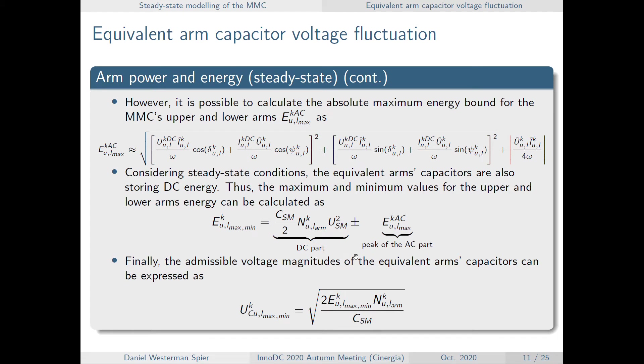So applying this equation, we're going to have the maximum and minimal values for the maximum and minimal energy bounds in the equivalent arm capacitors. And simply applying the relationship between them, the energy and the voltage, we have this expression which will be employing the optimization algorithm.